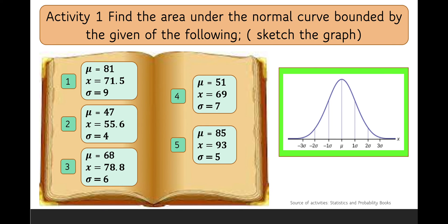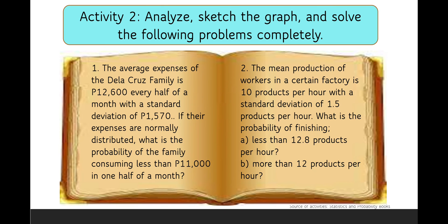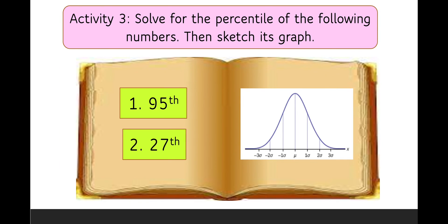For your activity, you are going to find the area under the normal curve bounded by the given values, items 1 through 5, and sketch each given — one graph for every number. For activity 2, analyze and sketch the graph and solve the following problems completely, with two problems given. For number 3, solve for the percentile of the following numbers.